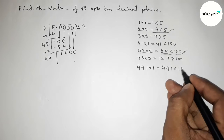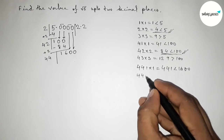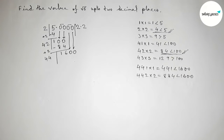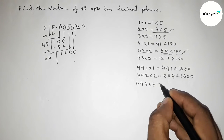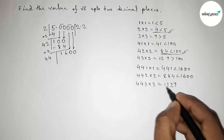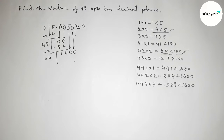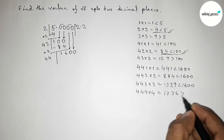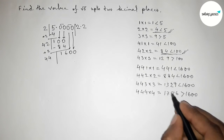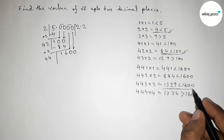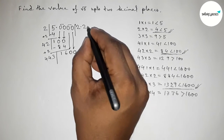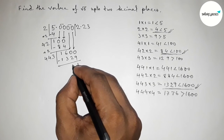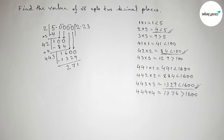We try digits beside 44. If we take 1, then 441×1=441, less than 1600. If we take 2, then 442×2=884, less than 1600. If we take 3, then 443×3=1329, less than 1600. If we take 4, then 444×4=1776, which is greater than 1600. So we take 3 since 1329 is closest to and less than 1600. Write 3 in the quotient and write 1329. Subtracting gives remainder 271.